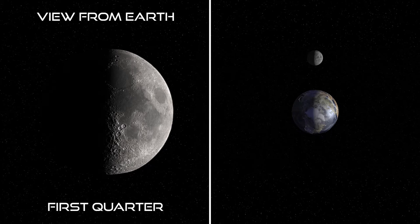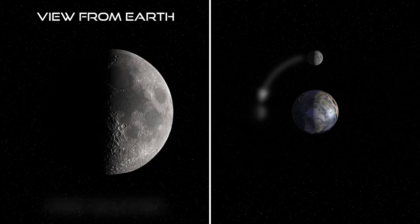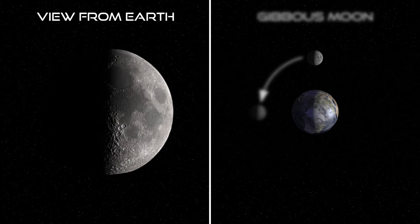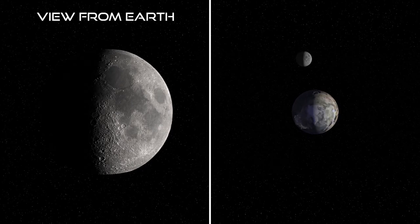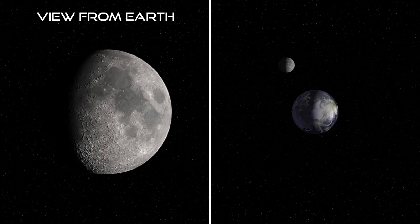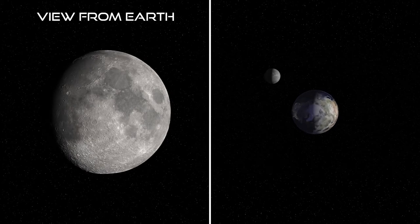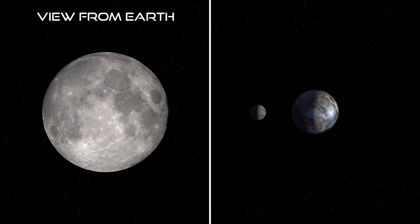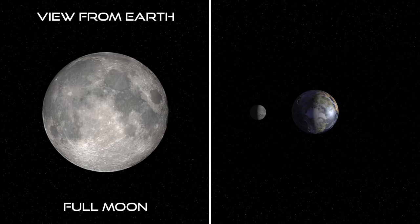Past the first quarter and up to a full Moon, the Moon is considered gibbous, instead of crescent. Note that the Moon in our model continues to grow larger in size — this is due to the relationship and positions of the Moon and Sun as seen from Earth. When the Moon reaches the halfway point in its orbit, we see a full Moon, and all of the Moon's surface is visible from our viewpoint.